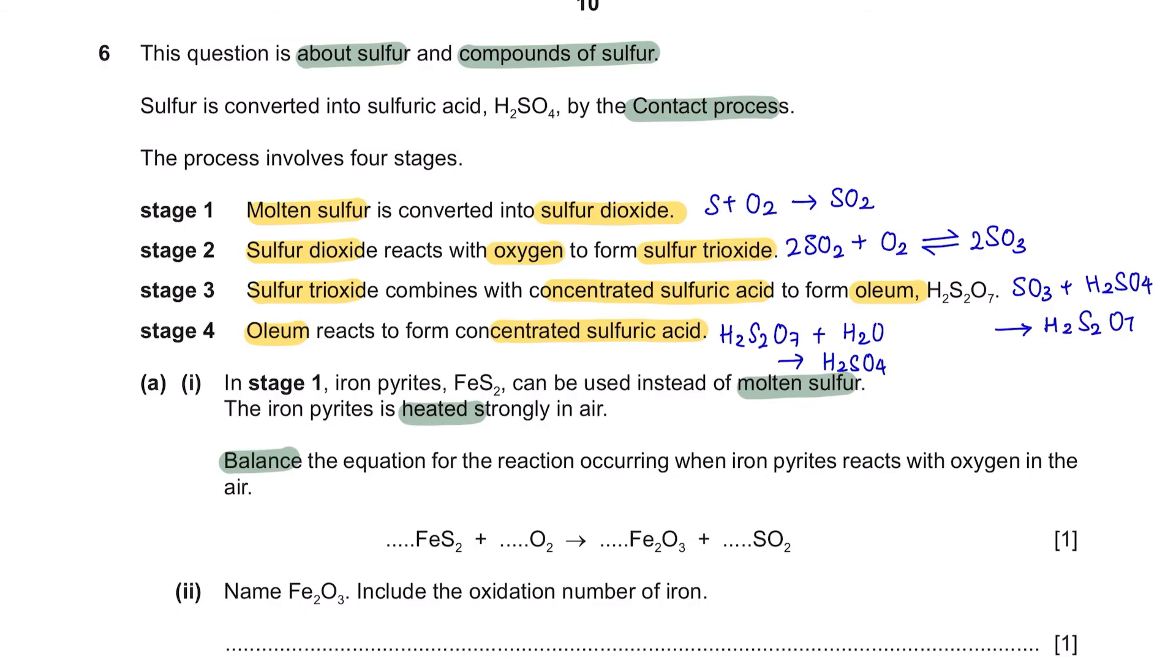Question A part 1. In stage 1, iron pyrites can be used instead of molten sulfur. The iron pyrites is heated strongly in air. Balance the equation for the reaction occurring when iron pyrites reacts with oxygen in the air. This should be simple. Let's start with iron. You have two iron here so we're going to put a two here, which will make your sulfur to become four, which now makes the oxygen to be eight. We're only left to balance oxygen. There are three oxygen from iron oxide, giving you a total of 11 oxygens on the product and only two oxygens on the reactant. So to balance this, we can write 11 over 2. However, we're not supposed to balance our equation with fraction. So I'm going to multiply the whole thing with 2.